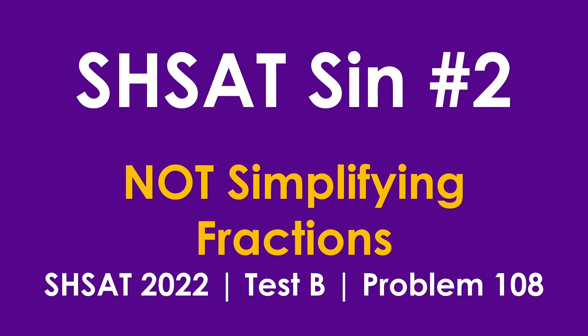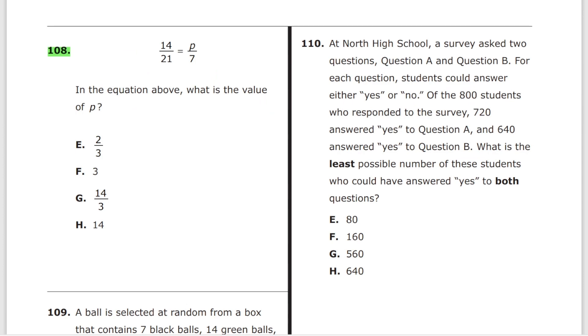SHSAT sin number two is not simplifying fractions. We are going to cover problem number 108 from test B of SHSAT 2022. In the equation above, what is the value of p, and this is the equation. What most of you will start doing right away is apply the butterfly method. So 14 times 7 is equal to 21p.